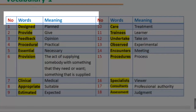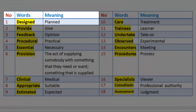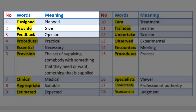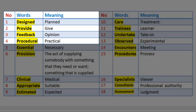Vocabulary 1. Number 1: Design — meaning planned. Number 2: Provide — meaning give. Number 3: Feedback — meaning opinion. Number 4: Procedural — meaning practical. Number 5: Essential — meaning necessary.